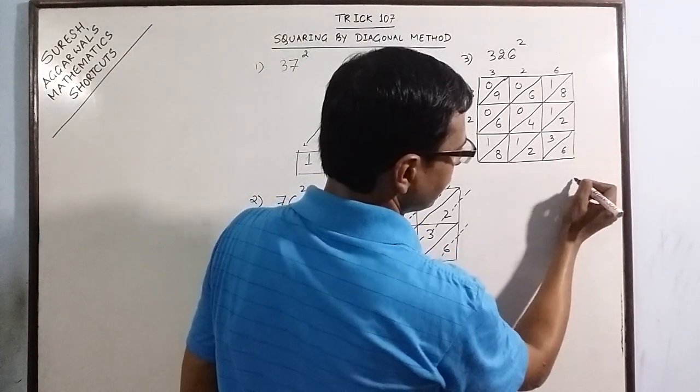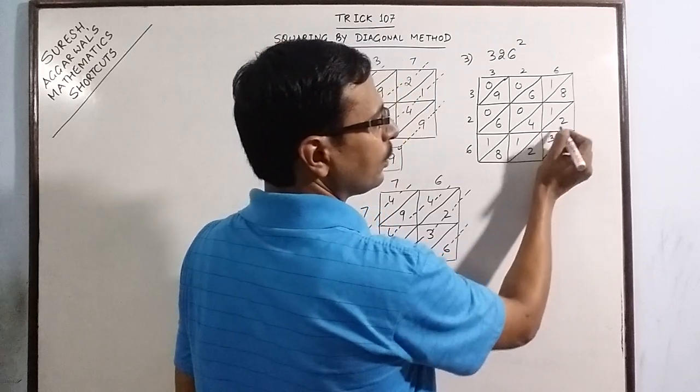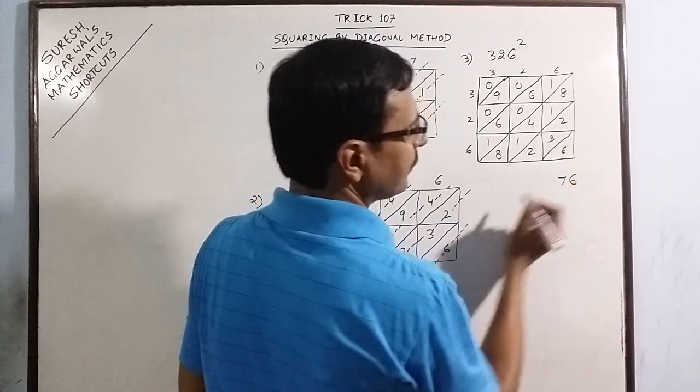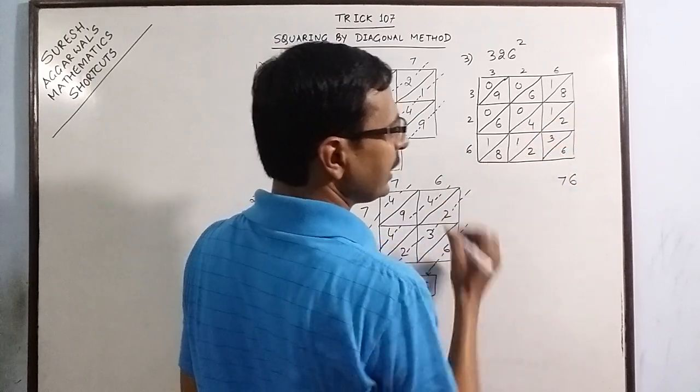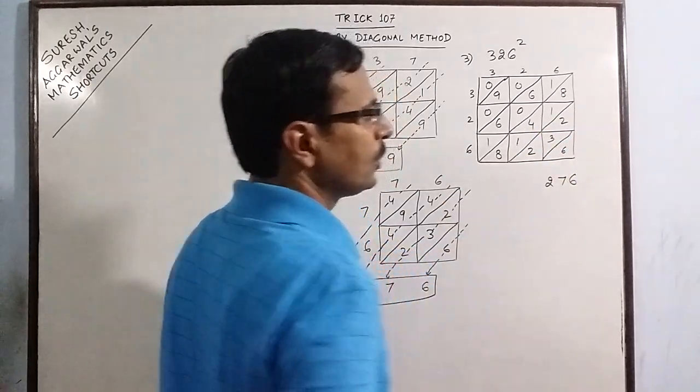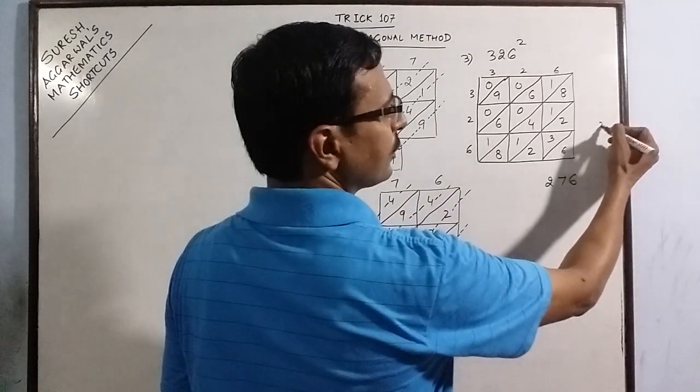2 plus 3 plus 2 is 7. 8 plus 1, 9 plus 4, 13. 14. 14 plus 8, 22. So 2. Now 2 is carried forward. You have to remember this 2 now.